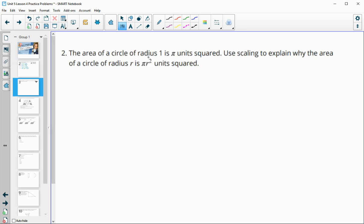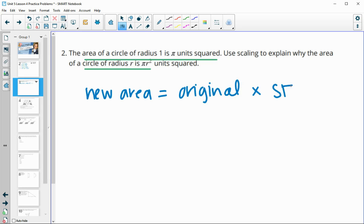Number two, the area of a circle with the radius of one is pi units squared. Use scaling to explain why the area of a circle with radius r would be πr² units squared. So remember what we just did in the last one is our new area is equal to our original area times the scale factor squared. So in this case,